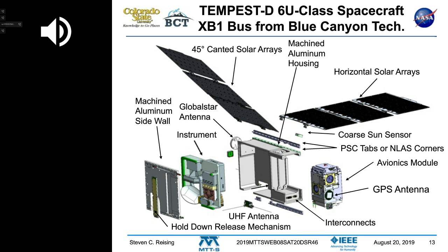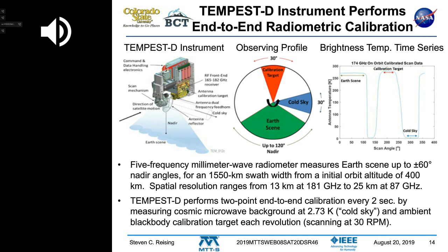The sidewall holds down the solar panels, and when they are released, the instrument antenna is free to rotate as well. The instrument, built by JPL, is a cross-track scanning radiometer — like most atmospheric sounding radiometers — scanning the Earth scene over plus to minus 60 degrees from nadir.